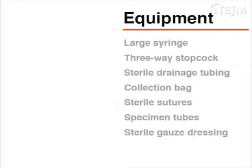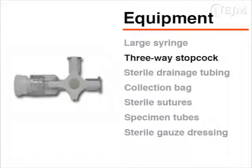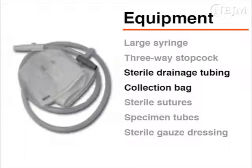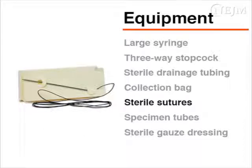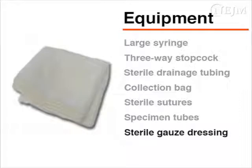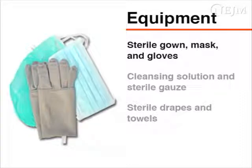For collection of pleural fluid and continuous in-situ drainage, you will need a large syringe, a three-way stopcock, sterile drainage tubing, a collection bag, and sterile sutures. You will also need specimen tubes for culture and sensitivity analysis. Sterile gauze dressing is needed for the puncture site. The procedure is aseptic; you will need a sterile gown, mask, and sterile gloves.